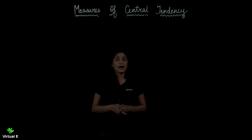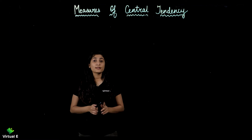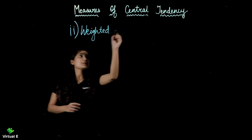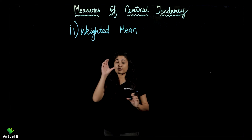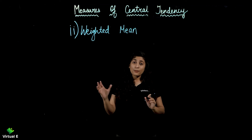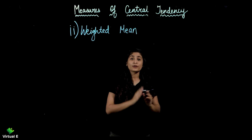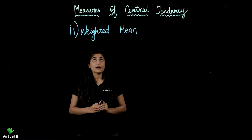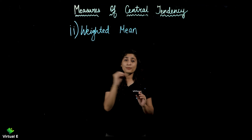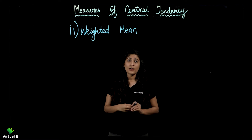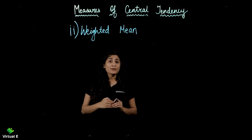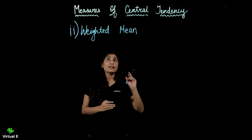Let us move on to the last topic. As we are done with the merits and demerits of mean, the second type of mean is weighted mean. Until now in simple mean, all observations in the series were getting equal importance. But here, every different item will get a relative importance — different weights will be assigned. In simple mean no weights are assigned, but in weighted mean every variable gets a relative importance and you have to calculate weights accordingly. Where all things are of equal importance, simple mean works, but where things are not of equal importance, weighted mean is used.